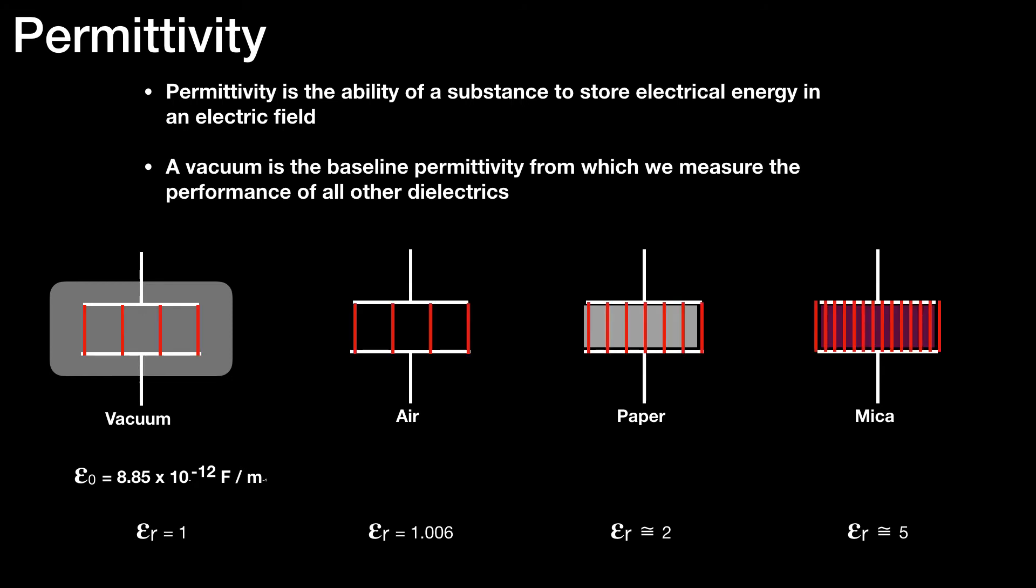And if we were to represent this visually, it might look something like this. The electric field lines for the vacuum and air capacitors are fairly spread out. There are about twice as many field lines for the paper one, and there should be about five times as many lines for the mica capacitor as for a vacuum or air.